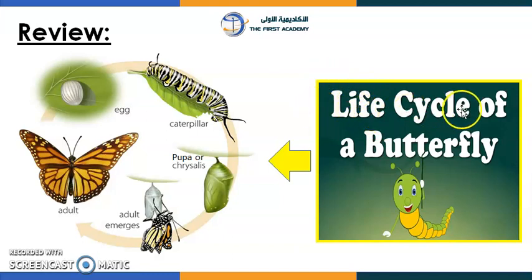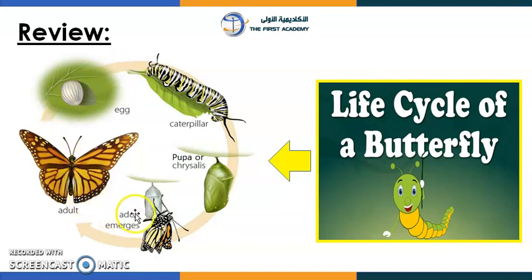What does 'life cycle' mean? I want you to think carefully and slowly about it. Try to say 'life cycle' and figure out the meaning. If you need help, you can look at the picture over here — especially since we are talking about the life cycle of a butterfly. The life cycle means the stages living things go through from birth to death.